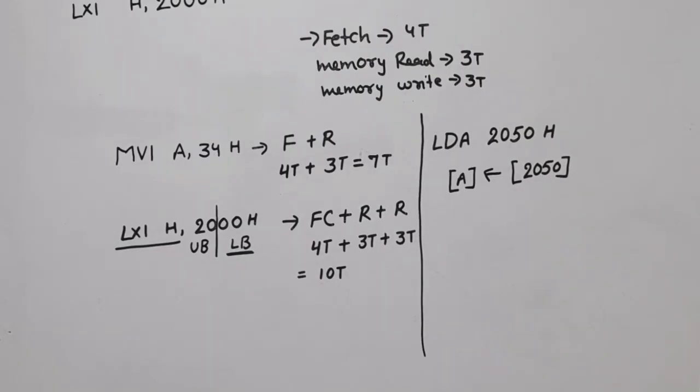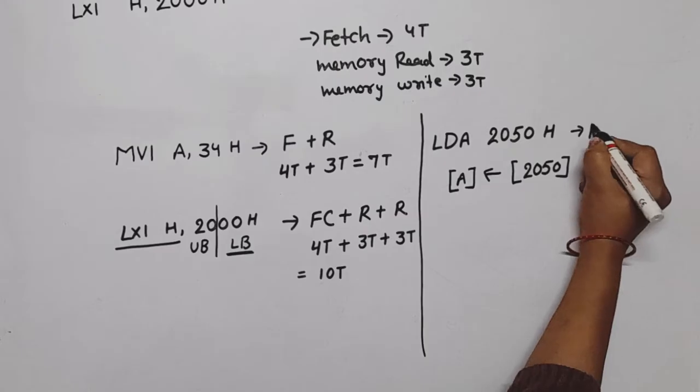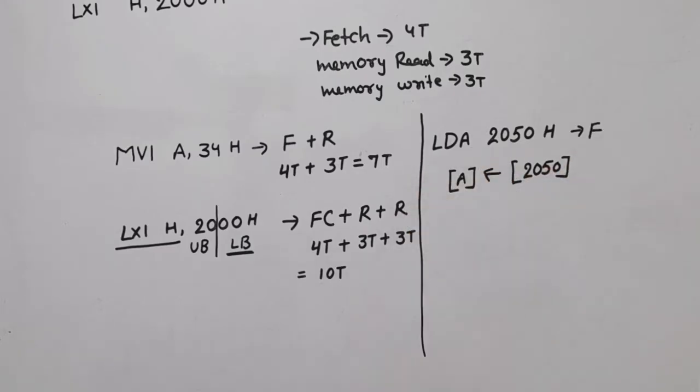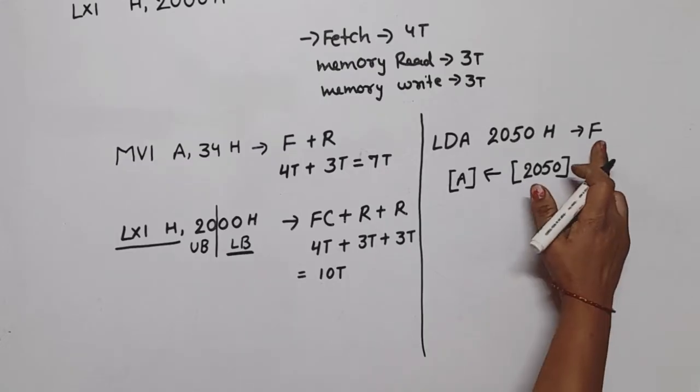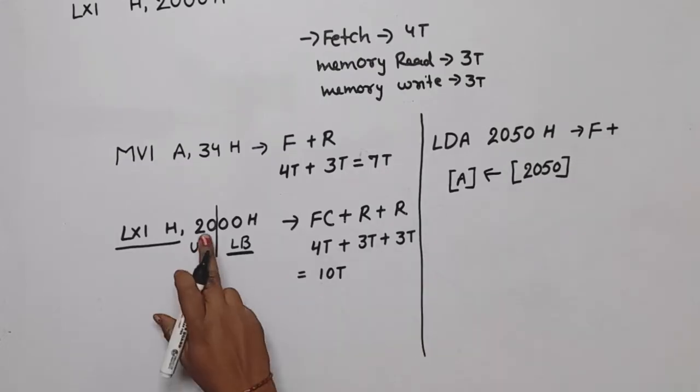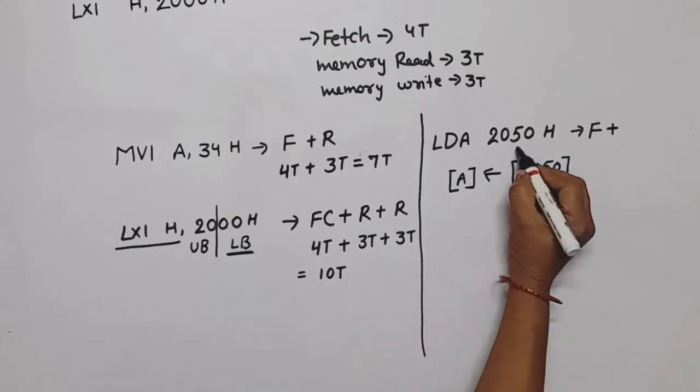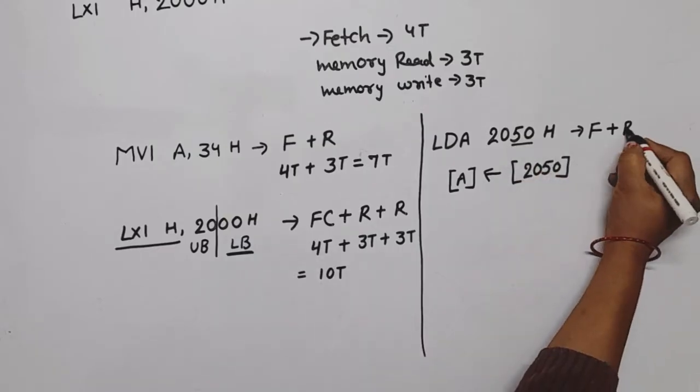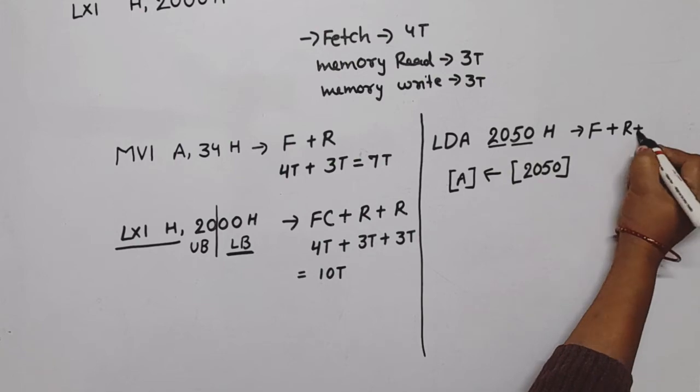Means where will the data be? Accumulator. As usual, as in previous instructions, what will be the first cycle? Fetch, because we need to understand what is the meaning of it. When the microprocessor will understand it, decode it, means one fetch plus again the same way here 16-bit means 2 bytes. So first lower byte read, then upper byte read.